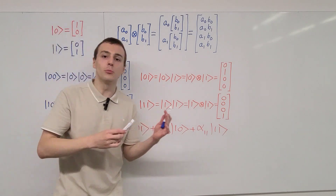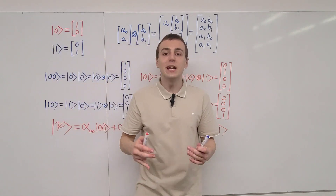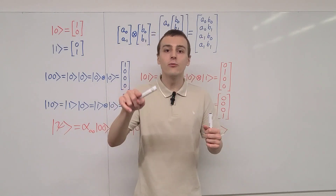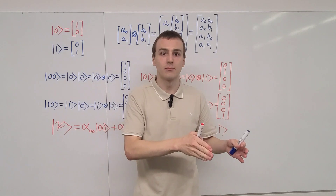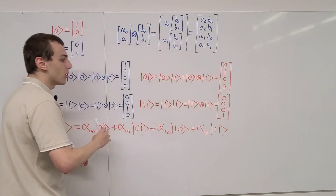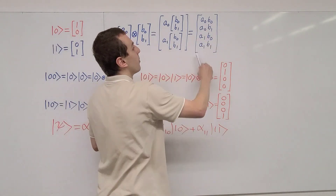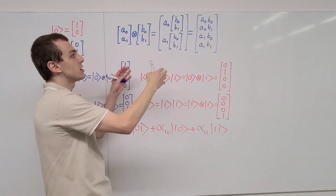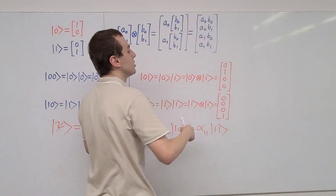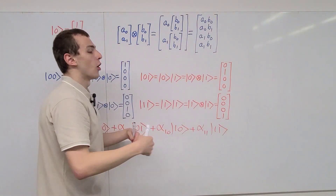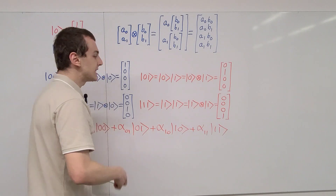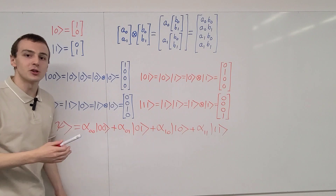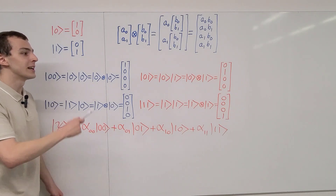We can also use this computational basis to construct matrix representations of two-qubit operators. These are 4×4 matrices that act on column vectors. In general, any two-qubit state is represented by a column vector with four entries, and we can use a 4×4 unitary matrix to act on that state to describe some kind of operation. You can see other videos in the quantum mechanics playlist where we use this two-qubit computational basis.